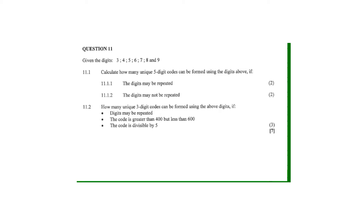On this question from November 2018: given the digits 3, 4, 5, 6, 7, 8, and 9 — that's seven unique digits — calculate how many unique five-digit codes can be formed if the digits may be repeated. Since repetition is allowed, we allocate a number for every position: positions one through five each have seven possibilities.